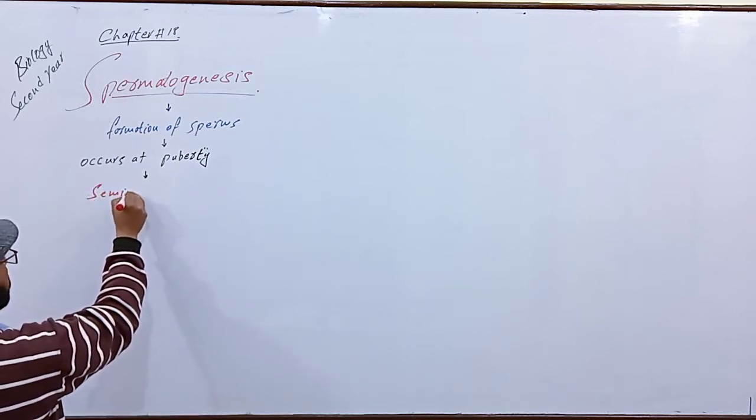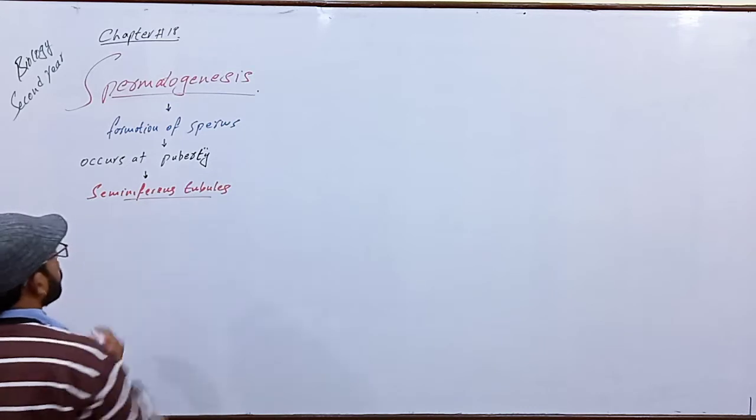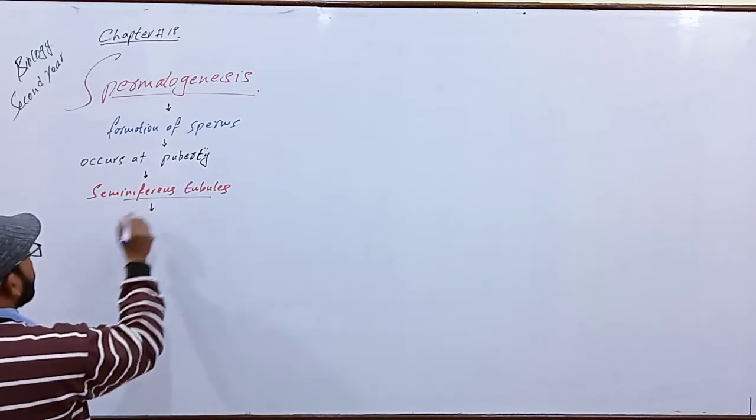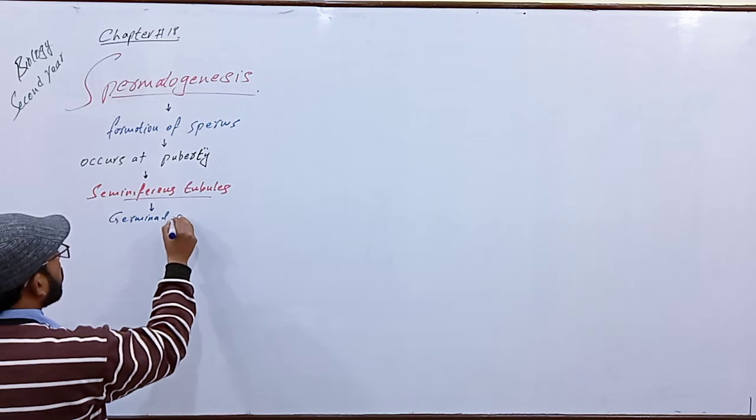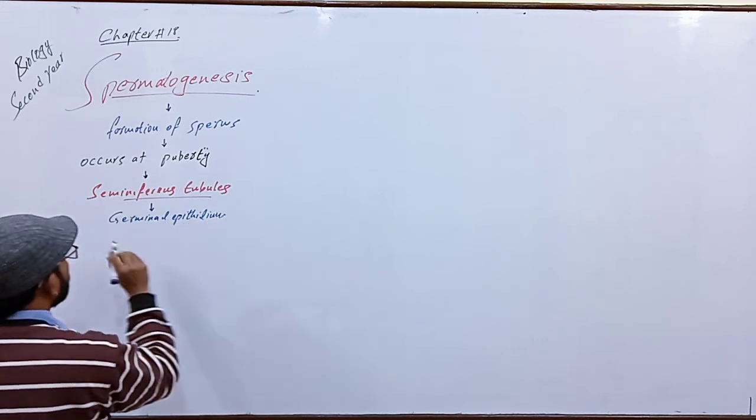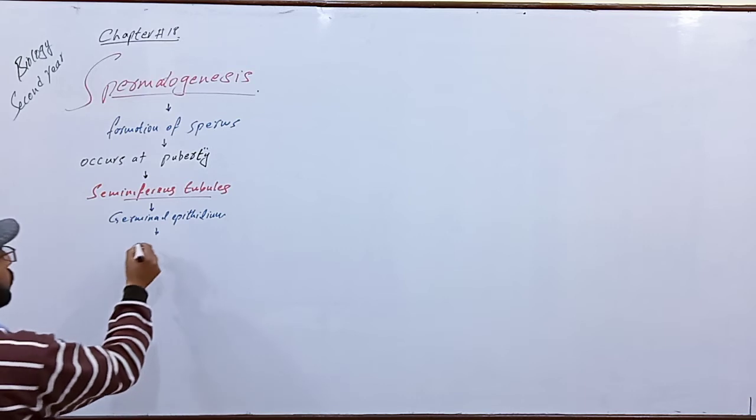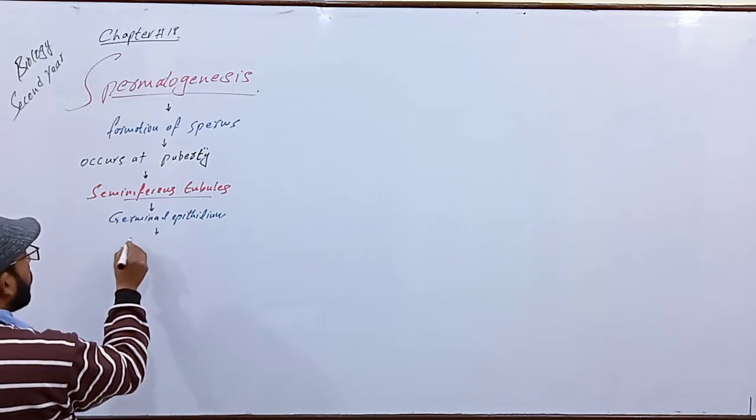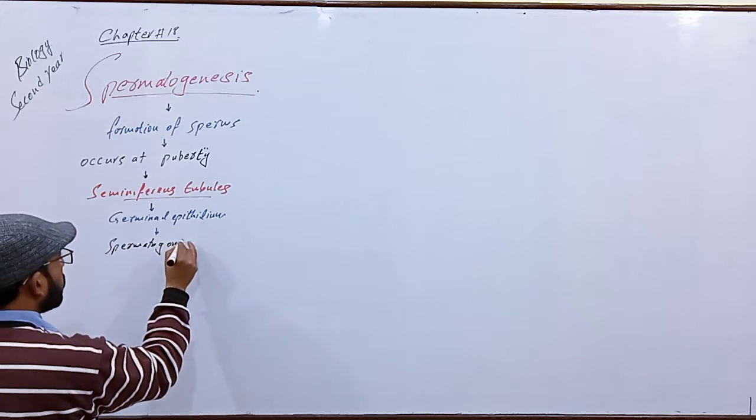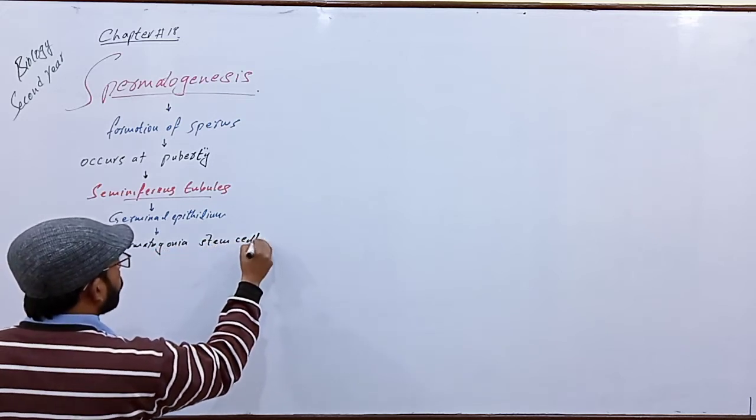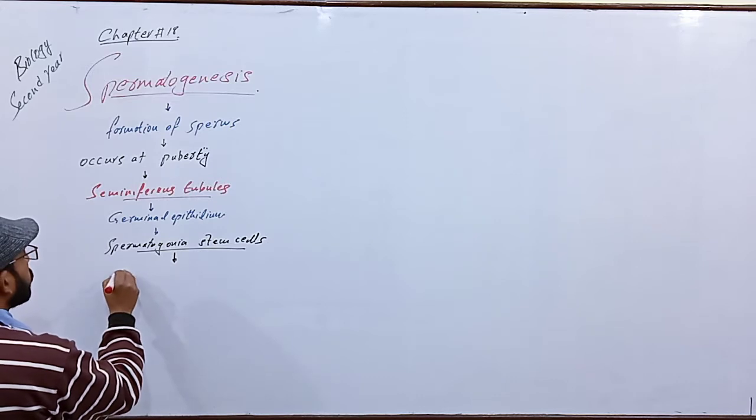Seminiferous tubules are responsible for the formation of sperm. Seminiferous tubules contain germinal epithelium, and this germinal epithelium produces sperm by the process of mitosis. This germinal epithelium produces spermatogonia stem cells.